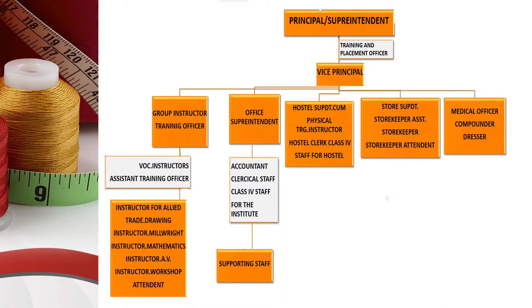The institute organizational structure includes Principal Superintendent, Training and Placement Officer, Vice Principal Subordinate, Vocational Instructors, Assistant Training Officer and their Subordinates, Accountant, Clerical Staff, and Class 4 Staff for the Institute and Subordinate.